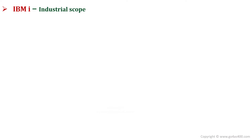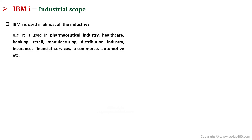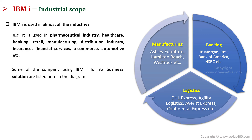IBM i is used in almost all industries, for example pharmaceutical, healthcare, banking, retail, manufacturing, e-commerce, etc. More than 100,000 companies are using the IBM i system. Some other companies using IBM i have been listed in the diagram.